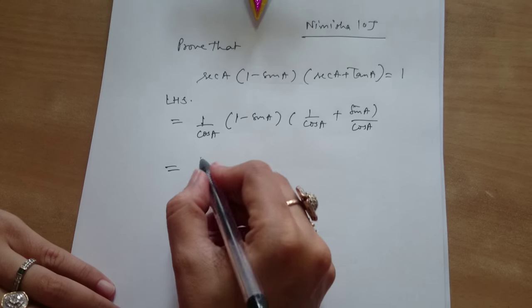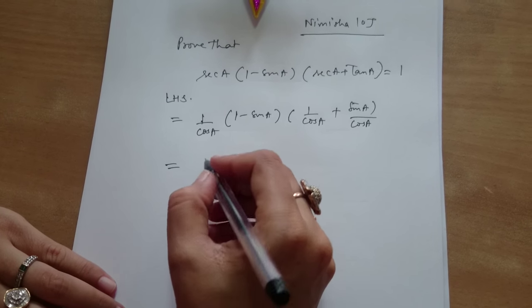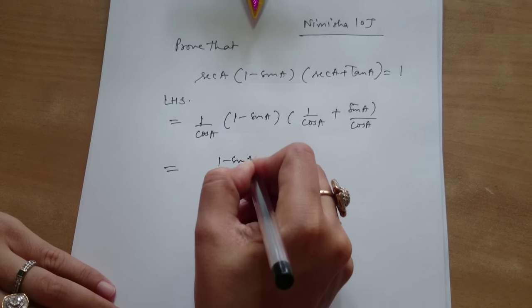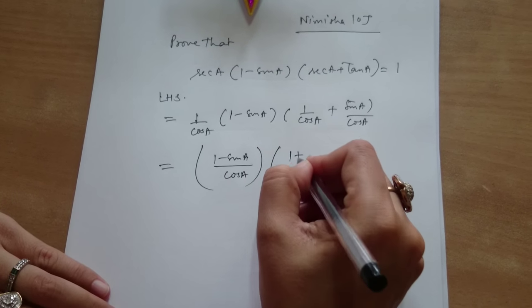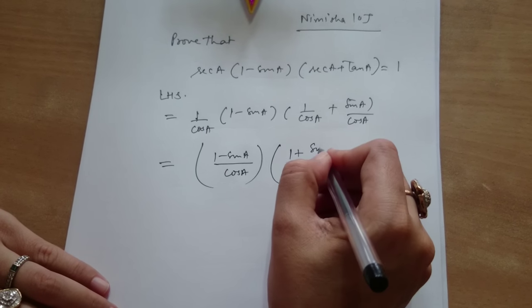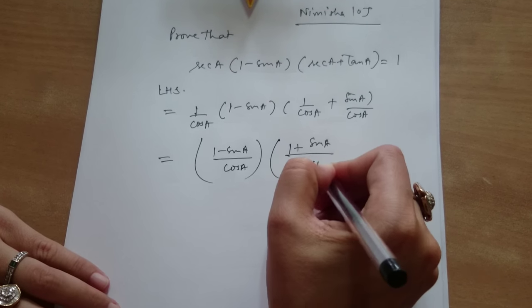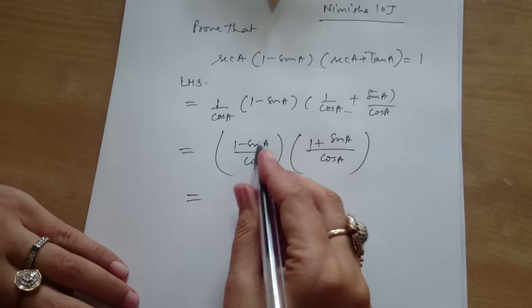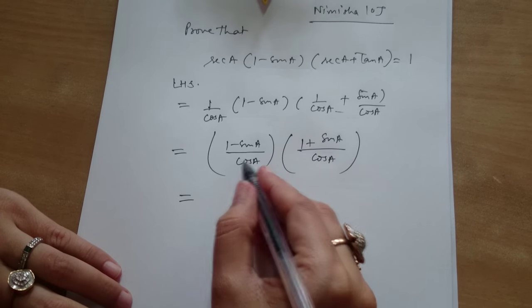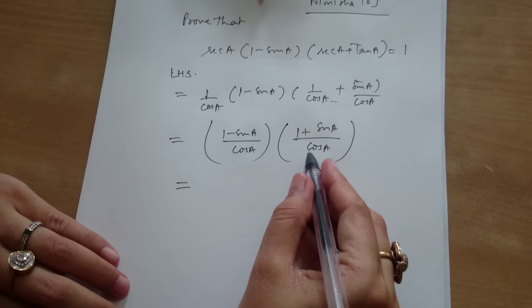This is equal to 1 minus sin a upon cos a multiplied by 1 upon cos a, 1 plus sin a upon cos a. You have taken LCM cos a from here. And now we multiplied the both numerator with the numerator and denominator with the denominator.